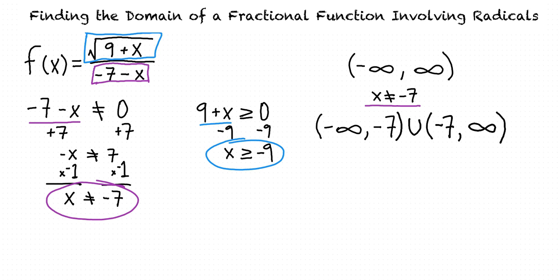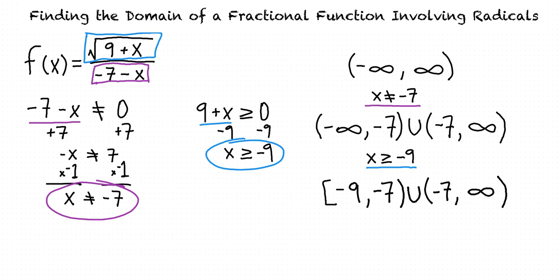Finally, let's rewrite this so that it only includes x values greater than or equal to negative 9. The only change is that instead of our first interval going from negative infinity to negative 7, it goes from negative 9 up to negative 7. A square bracket next to a number means that number is included in our interval. Since negative 9 can be plugged into our function and gives a real number — zero — it should be included in the domain, so we use a square bracket. For negative 7, we use a round parenthesis because including it would make the denominator equal zero.